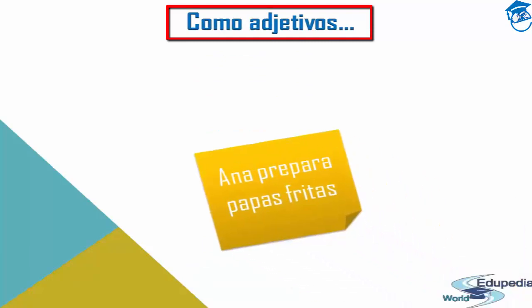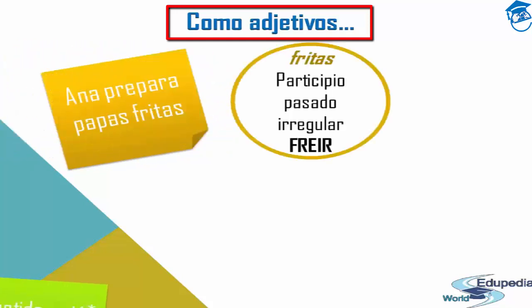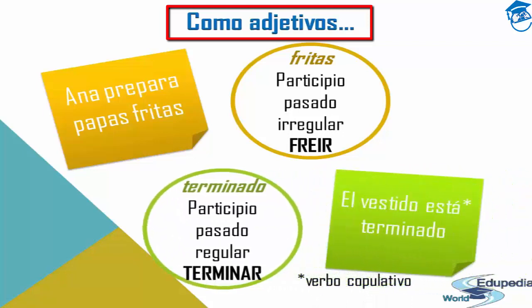The past participle can also be used as an adjective — puedes usarlo también como adjetivo. For example: 'Anna prepara papas fritas' — Anna prepares fried potatoes, or french fries as we say in English. 'Fritas' is the irregular past participle of 'freír' (to fry), and here it functions as an adjective modifying the noun 'papas' (potatoes).